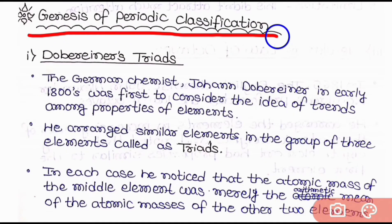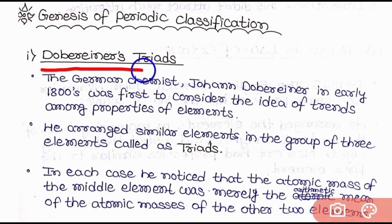Now, let us come to the genesis of Periodic Classification. The first one to classify elements was Döbereiner and the classification done by Döbereiner is also known as Döbereiner's Triad. The German chemist Johann Döbereiner in early 1800 was the first to consider the idea of trend among the property of elements. He arranged similar elements in the group of three elements called Triads.